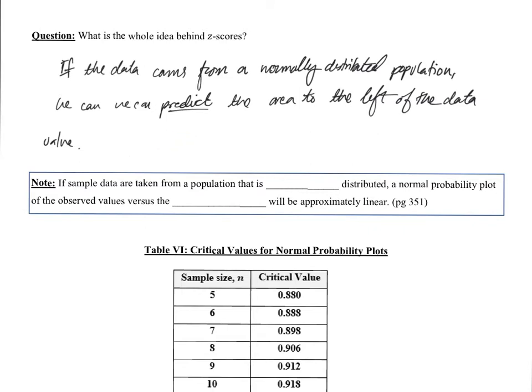Note: if sample data are taken from a population that is normally distributed, a normal probability plot of the observed values versus the expected z-scores will be approximately linear. Remember, the z-scores represent our prediction of the area.